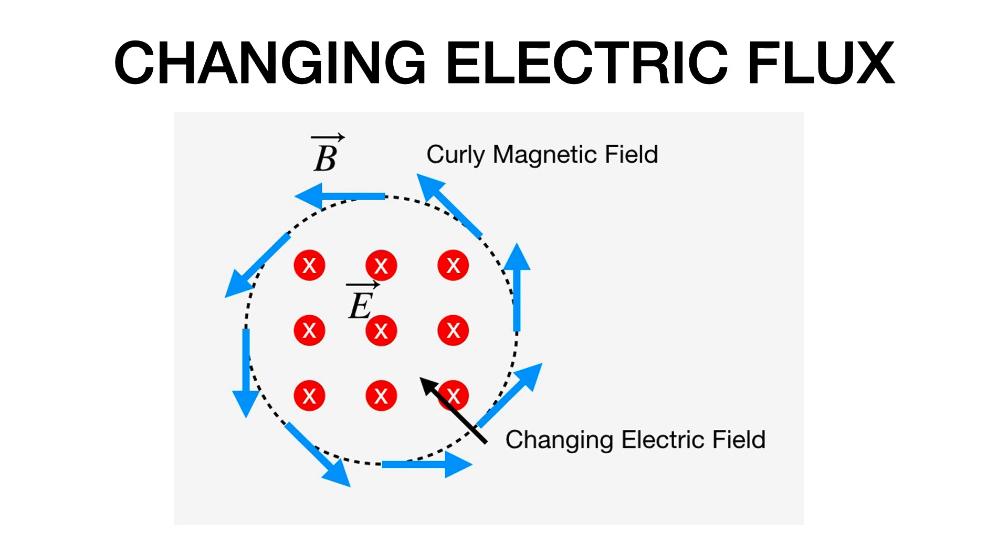It turns out that a changing electric field also makes a curly magnetic field. So that's kind of symmetric there. And that's important. A changing magnetic field makes a curly electric field, a changing electric field makes a curly magnetic field.